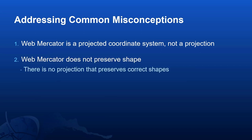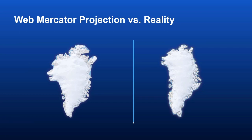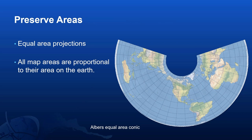Next, Web Mercator does not preserve shapes. Actually, there is no projection that does that. Looking at Greenland, on Web Mercator its shape stretches in the east-west direction compared to the more realistic shape. What projections can preserve are areas — those are equal area projections. On such maps, all areas are proportional to their area on the Earth. Here we have an example of Albers conic projection. Greenland still appears to be 14 times smaller than Africa, although their shapes are distorted.